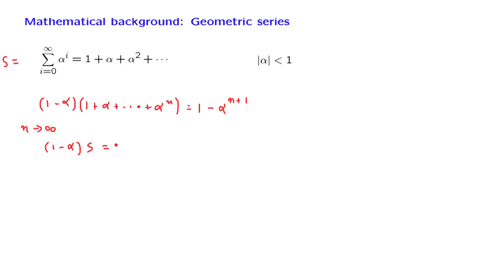On the right-hand side, we have the term 1. How about this term? Since alpha is less than 1 in magnitude, this converges to 0 as alpha goes to infinity. So that term disappears.